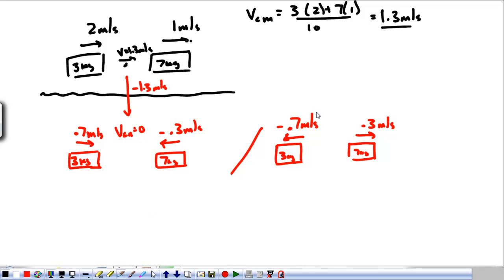But, that's not real life, so we have to come back to real life by taking our center of mass that's not moving and make it move like it was before at 1.3 meters per second. So, we add 1.3 meters per second. Which means negative 0.7 plus 1.3 is 0.6.